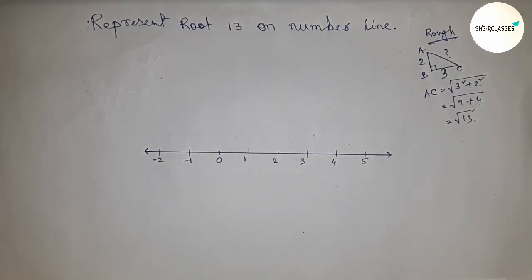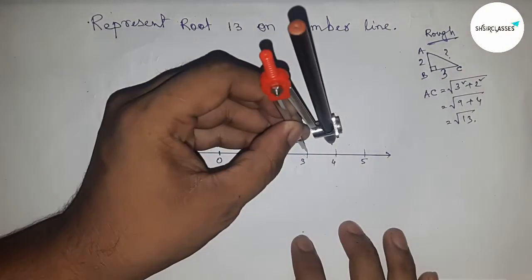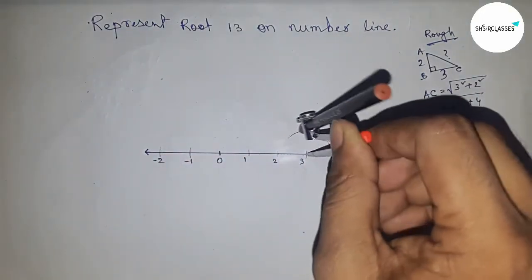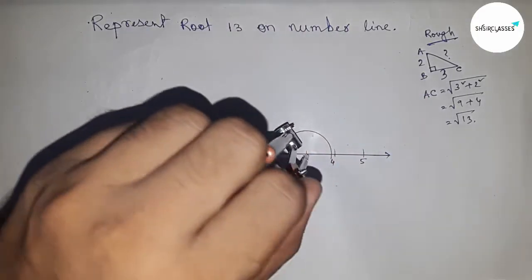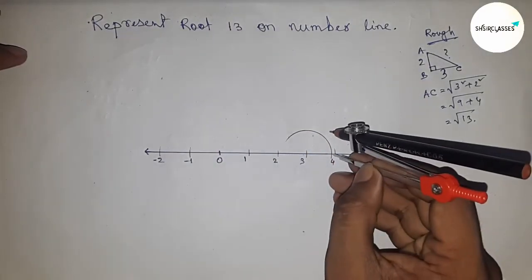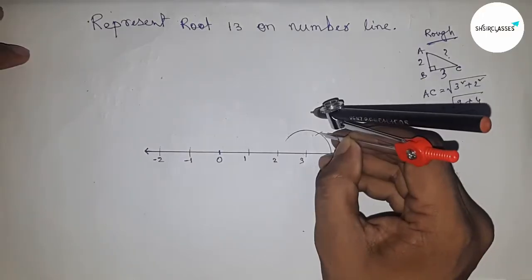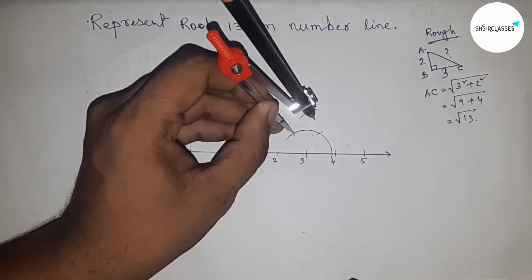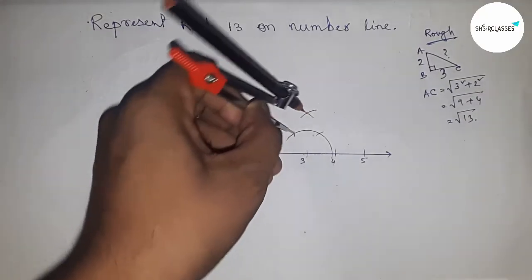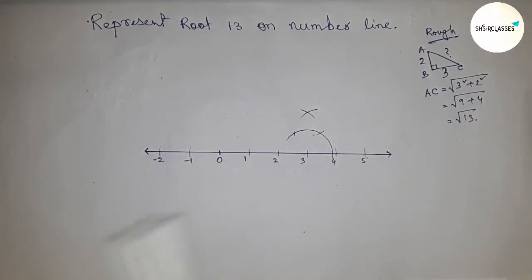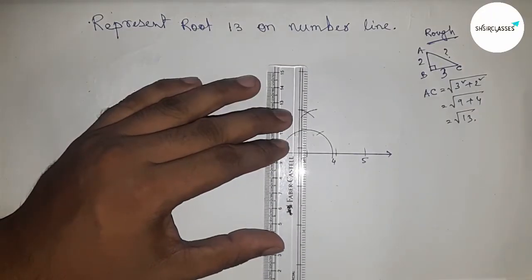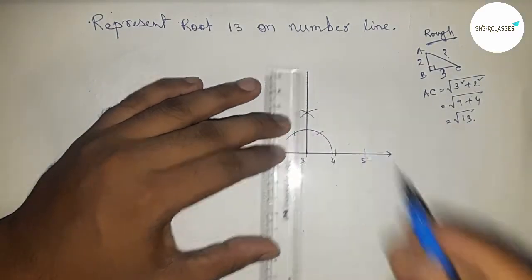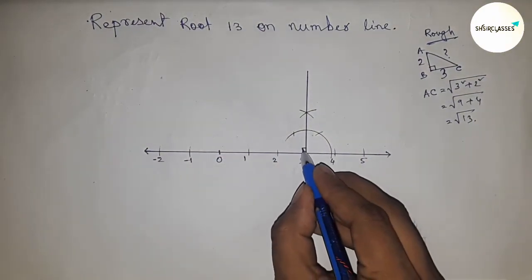Applying this concept on point 3. First, we have to draw 90 degrees because we need to draw a right angle triangle. If you don't know how to construct 90 degrees, first watch my video on my channel. Draw a 90-degree angle on point 3 and join to get the angle.